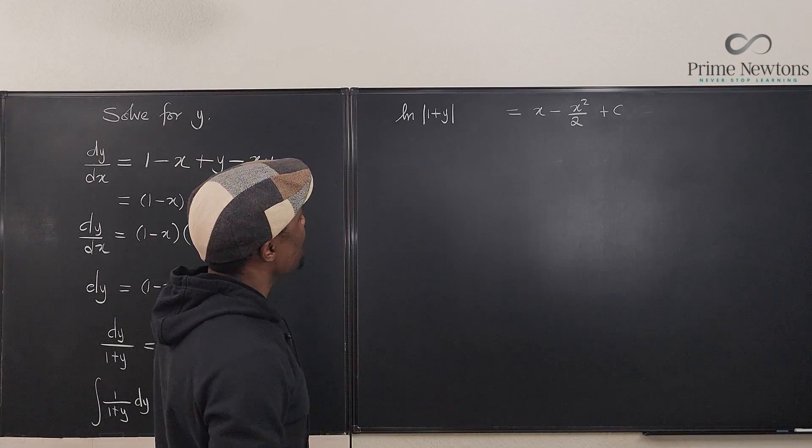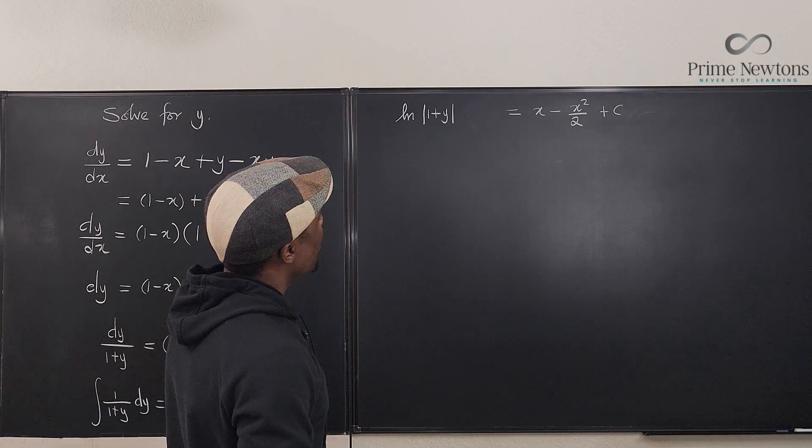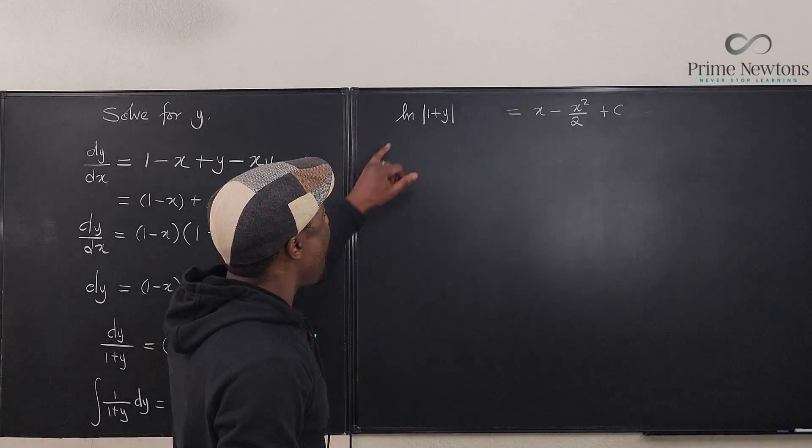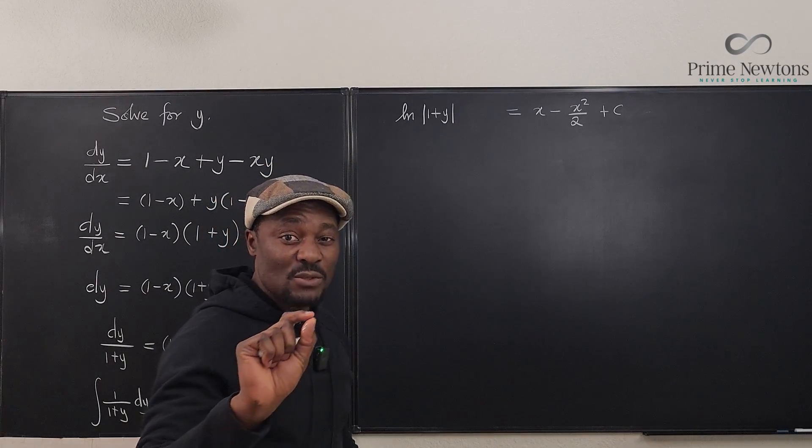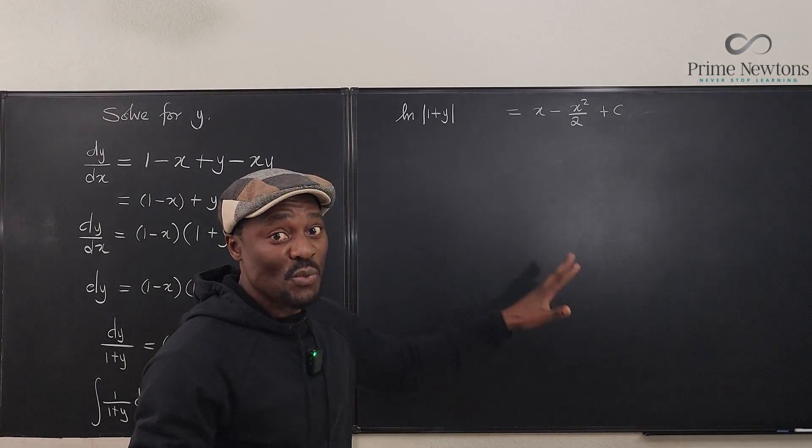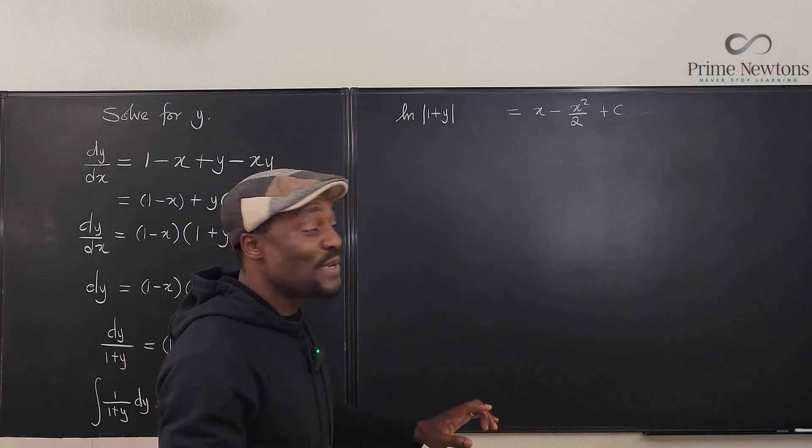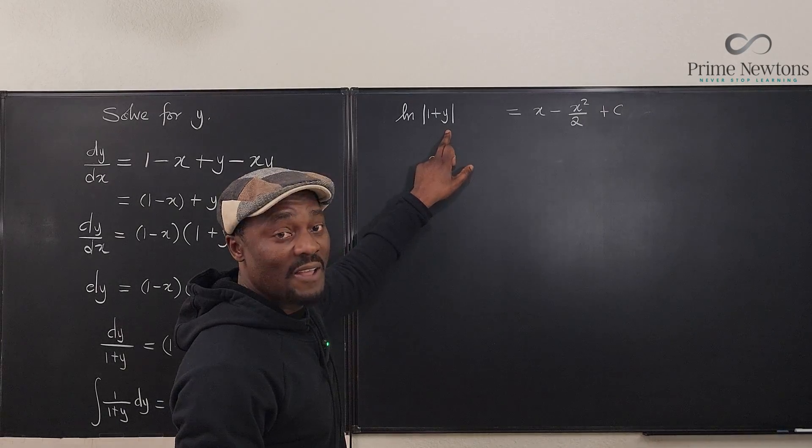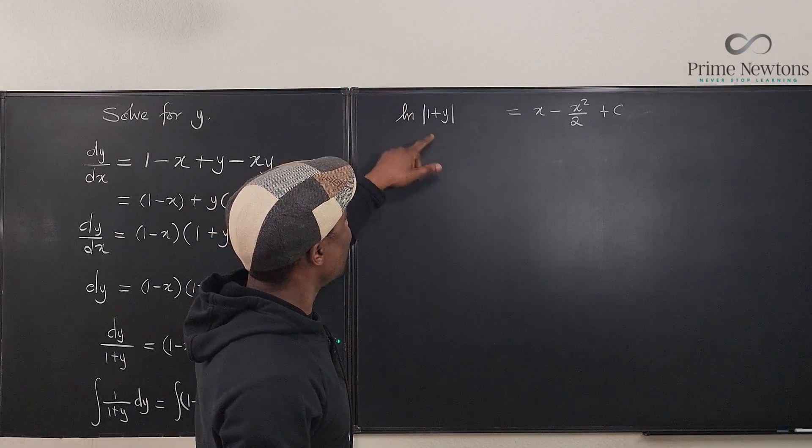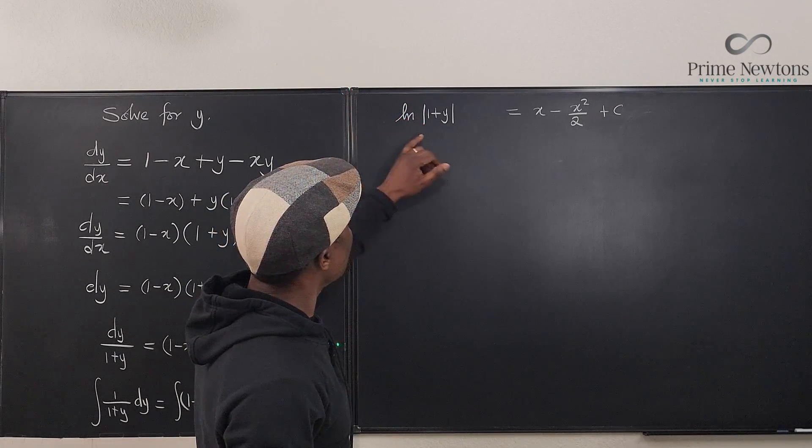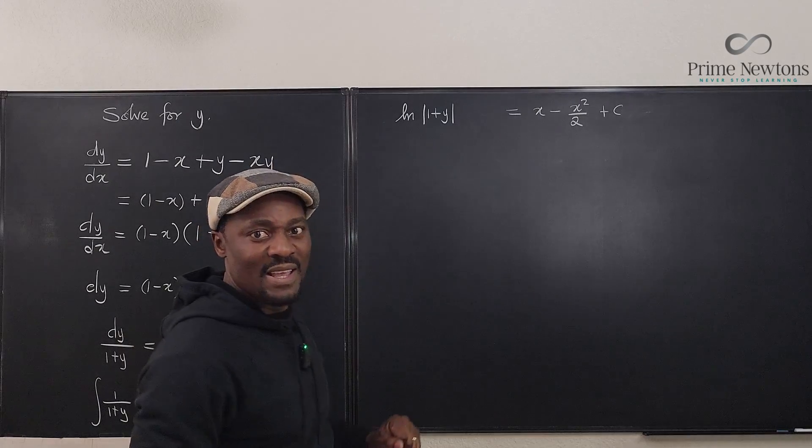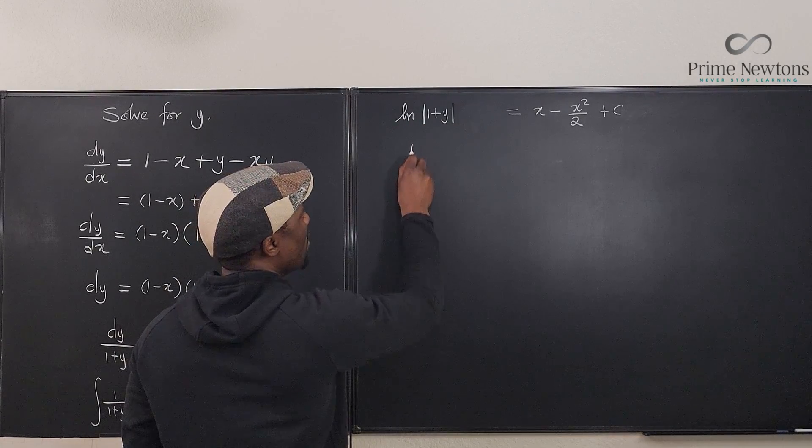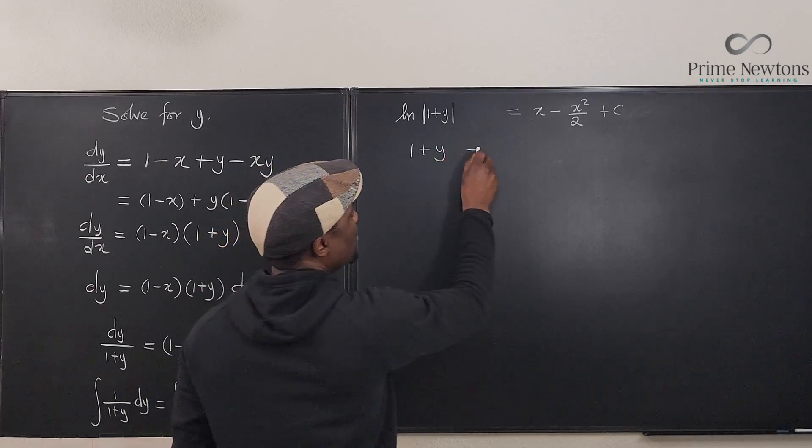Let's finish this up. We're almost done. Remember what we're looking for is y, we're not looking for (1 minus y), we're looking for y. So what do we do? In order to release this guy here, we didn't have to use absolute value function - 1 plus y, maybe it's okay. But here we're just going to say if you take the e of both sides, you have (1 plus y) equals e raised to power all of this, which is x minus x squared over 2 plus c.